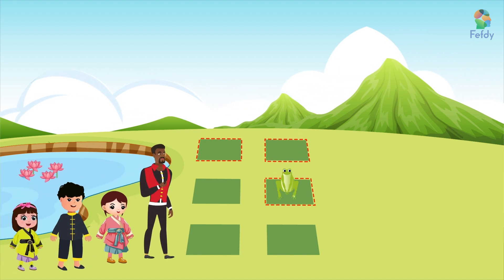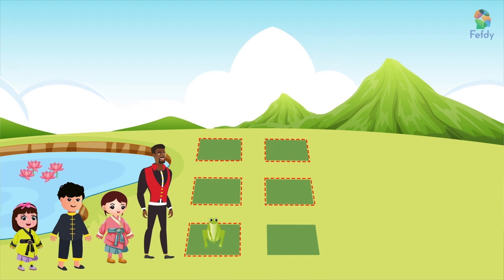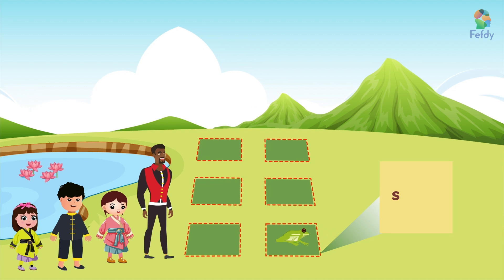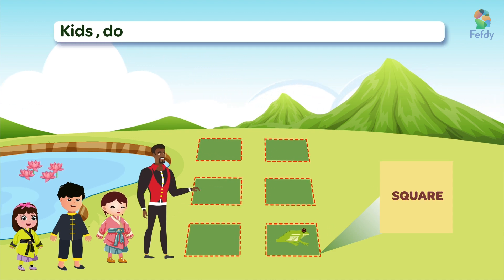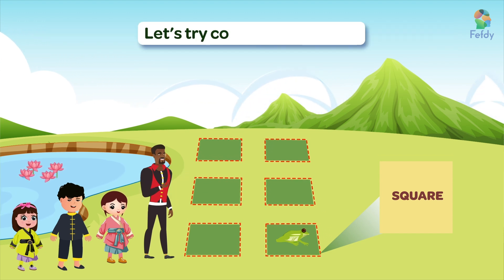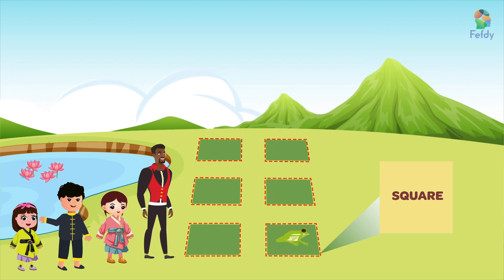Look at these square patches of land where frogs are playing. This shape is a square. Kids, do you know how many sides a square has? Let's try counting, shall we? Alright, Uncle.